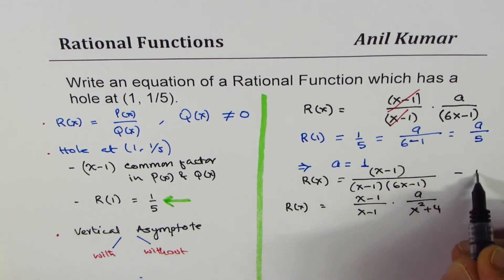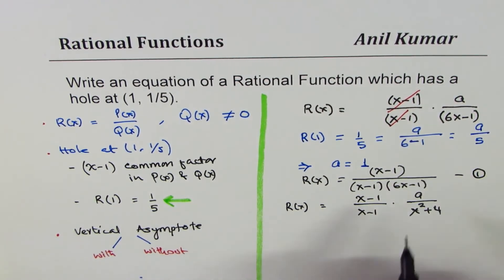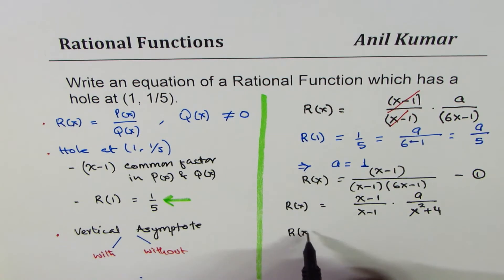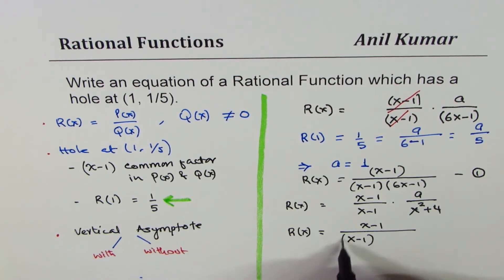That is one solution to the given situation. Now let's look into the second one where we have taken x²+4. Here also, if I substitute 1, I get a/5, and 'a' should be 1. So we could write this as R(x) = (x-1) / [(x-1)(x²+4)].